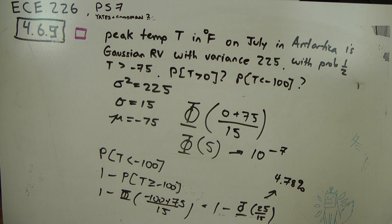So it doesn't get very warm, but it can get very cold in Antarctica in July.